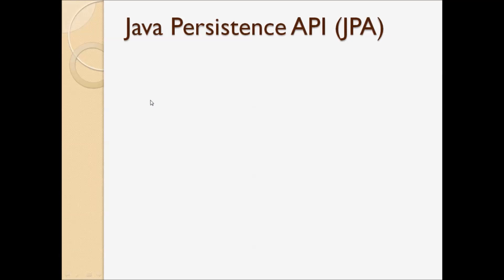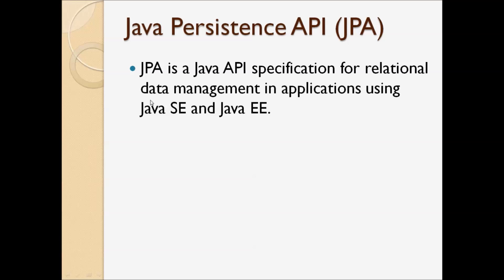Let's understand about the Java Persistent API or JPA. JPA is a Java API specification for relational data management in applications using Java SE and Java EE.